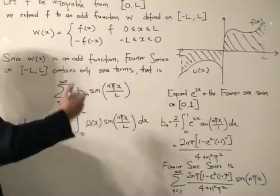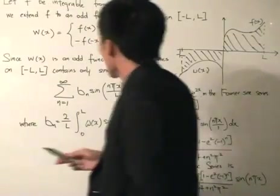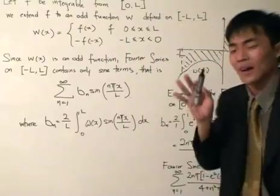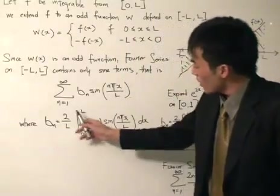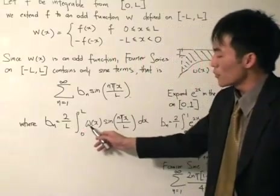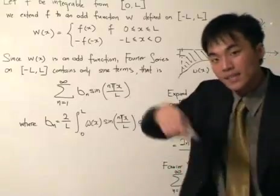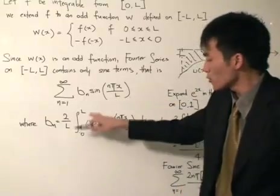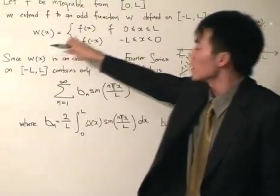So what does it tell us? It tells us that we can now write the Fourier series of w(x). And w(x) is an odd function, so the Fourier series on -L to L contains only sine terms. That is this thing over here where b_n is this thing right there.